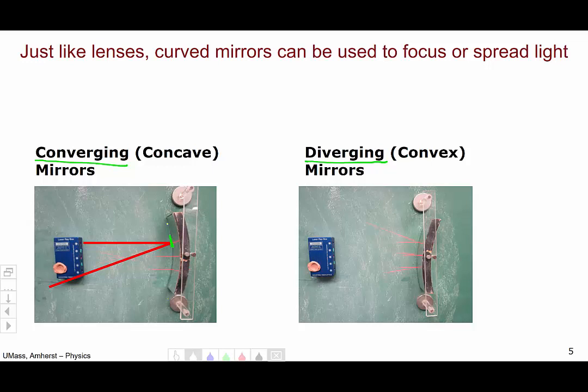If we take a second light beam from the bottom of the box and again apply the law of reflection to the point where the light beam hits the mirror, it will bounce out something like this. We can see that the two light rays have been converged to a point.